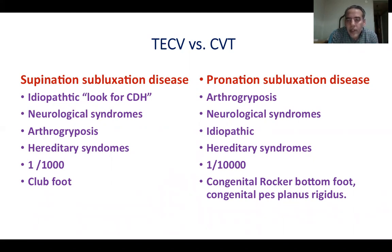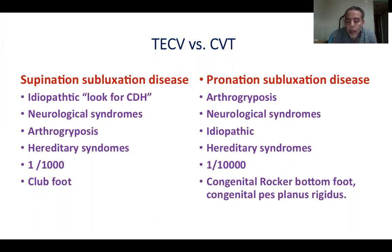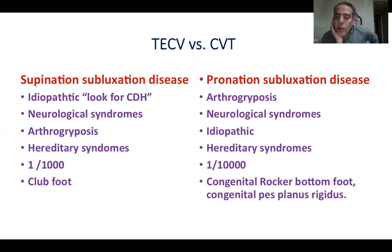As for congenital vertical talus, it's a pronation subluxation disease of the subtalar joint. It is commonly part of syndromes like arthrogryposis and neurological syndromes like spina bifida. It may be idiopathic and is sometimes associated with hereditary syndromes. It is very rare compared to talipes — its incidence is one in ten thousand. The other name is congenital rocker bottom foot deformity.